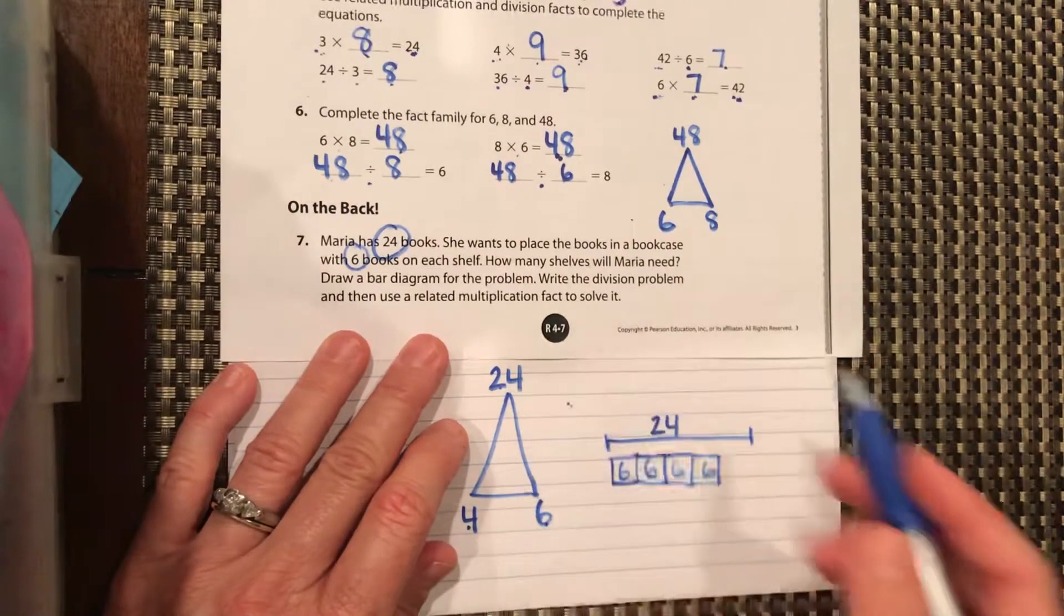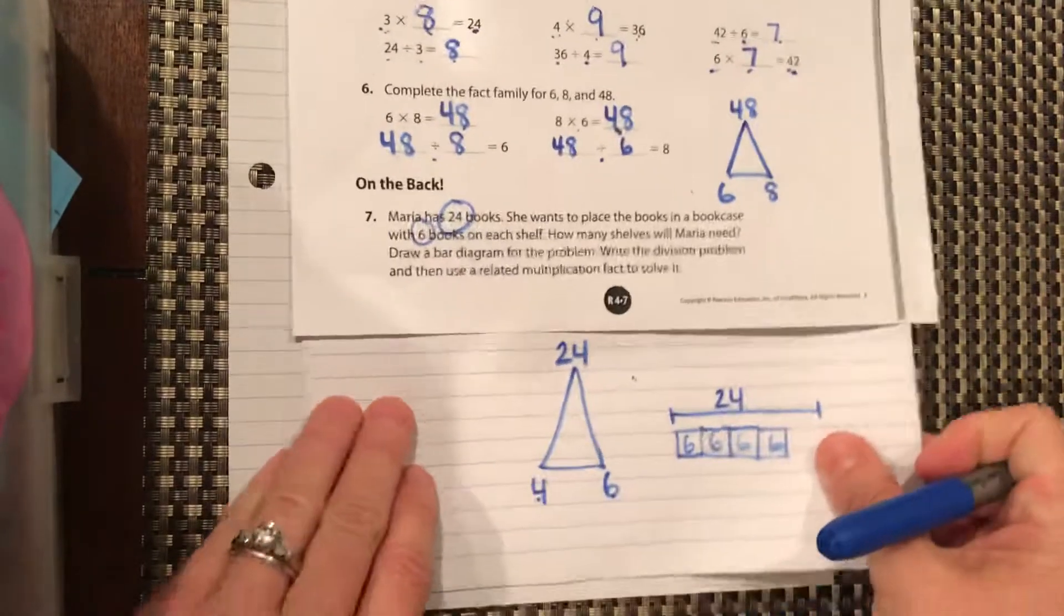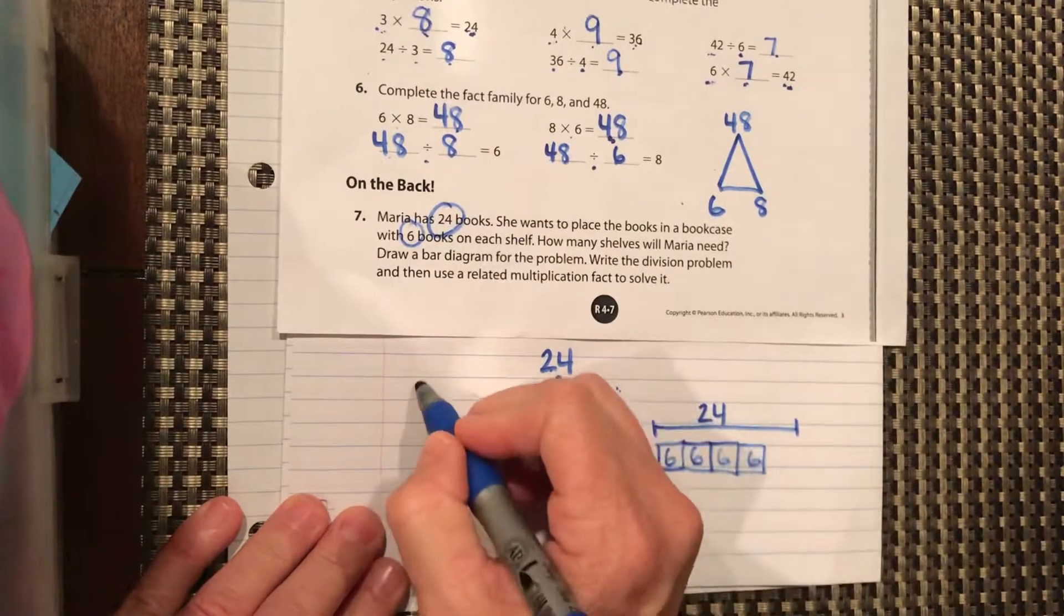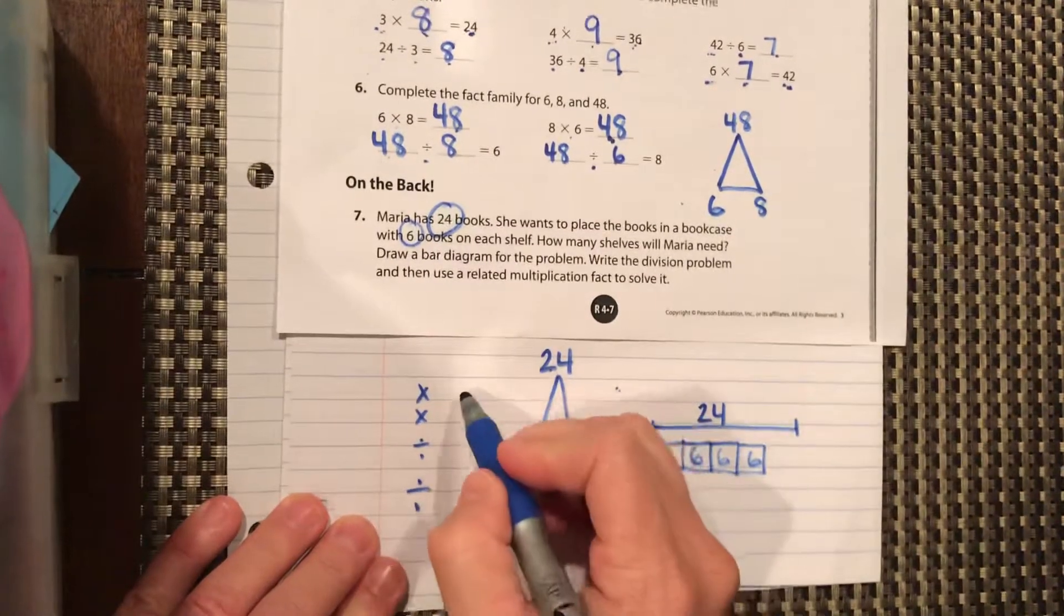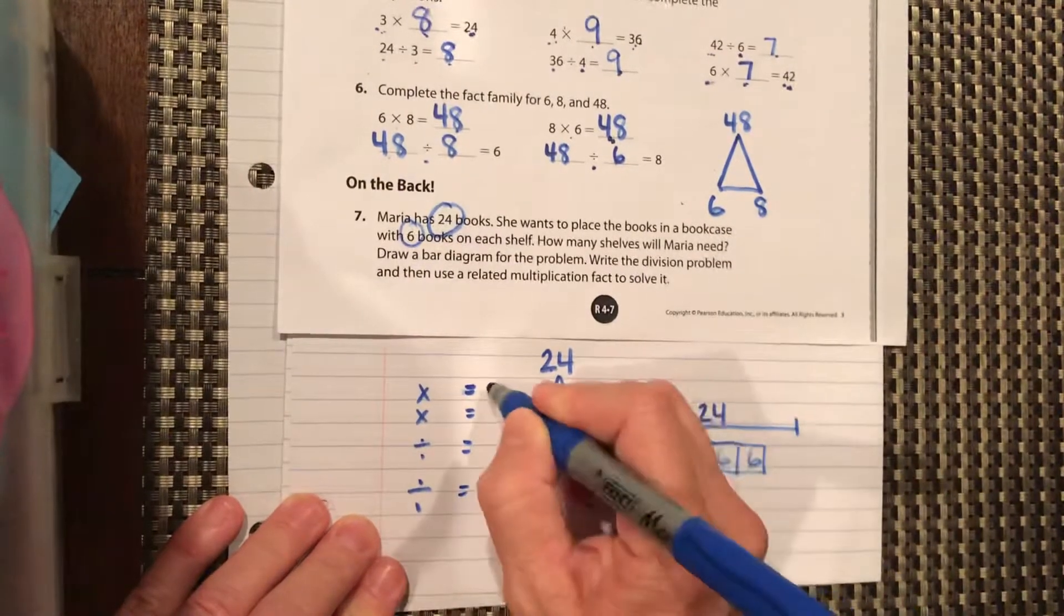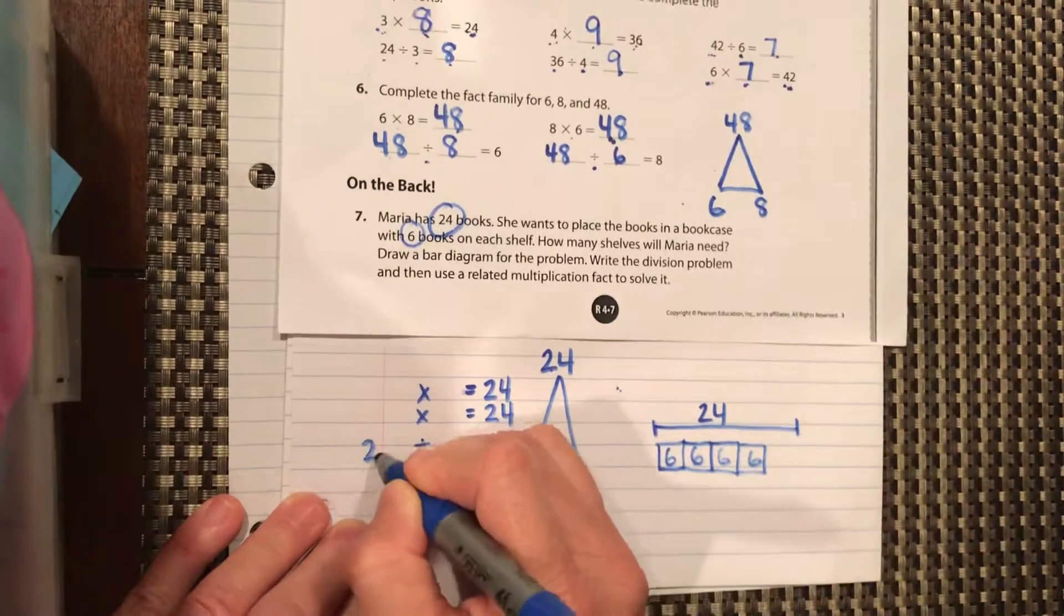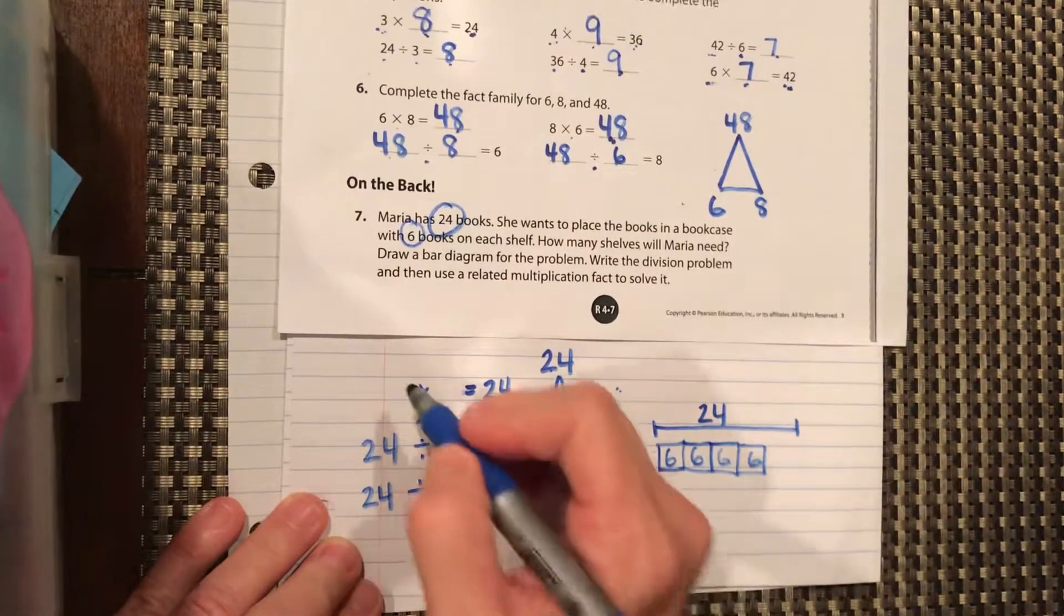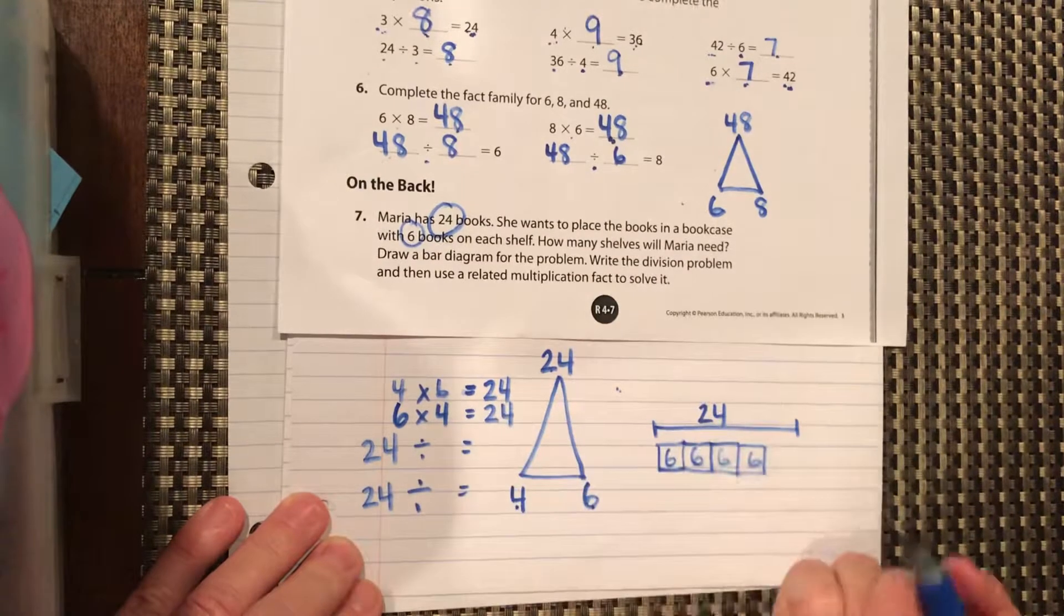Write the division problem and then use a related multiplication fact to solve it. So our division problem would be, we got four, six, and 24. So let's just write our multiplication and our division problems. 24 is last in line on our multiplication and therefore first in line in our division, since life is fair in multiplication and division world. And we have four and six. Four times six is 24, six times four is 24.